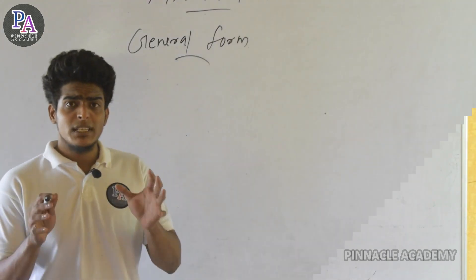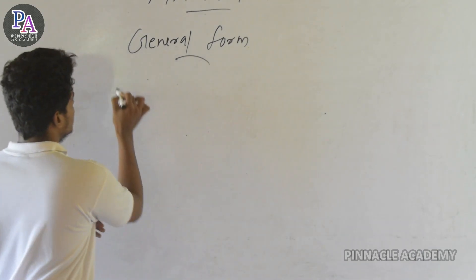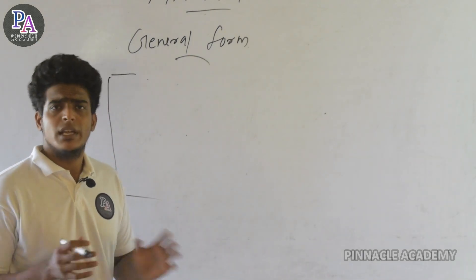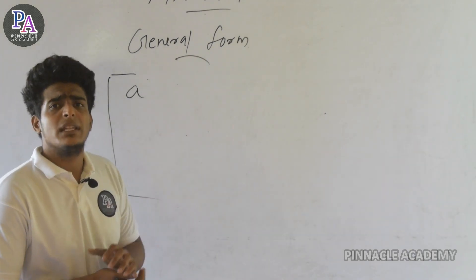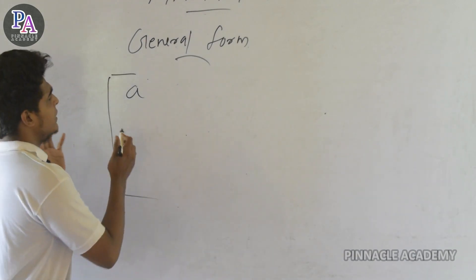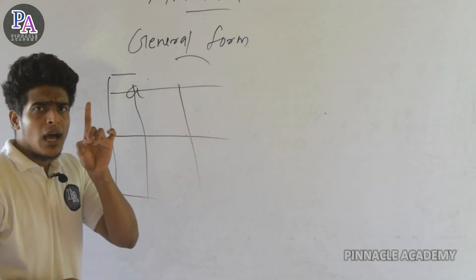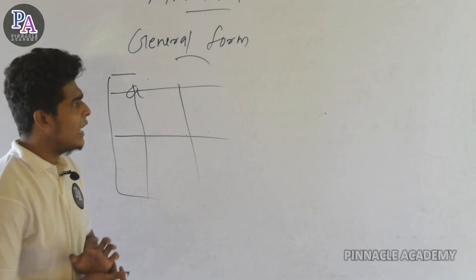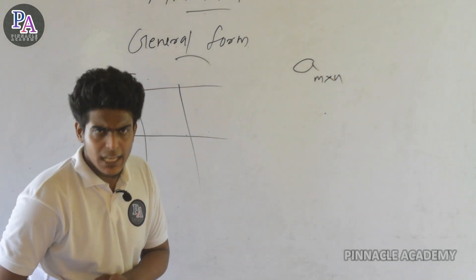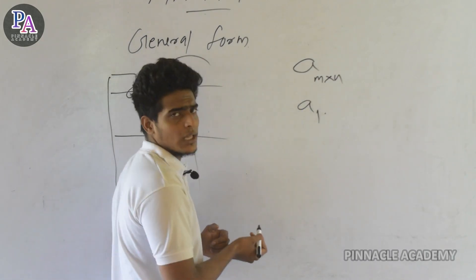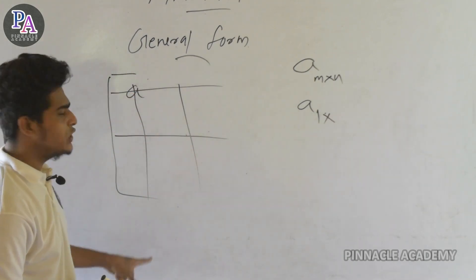Now let's take the general form. If we consider a matrix in general form, if you want to make a matrix, we represent it as a row. We are going to construct a matrix in general form.